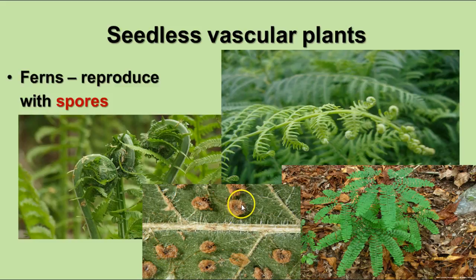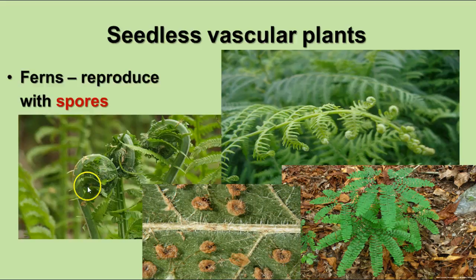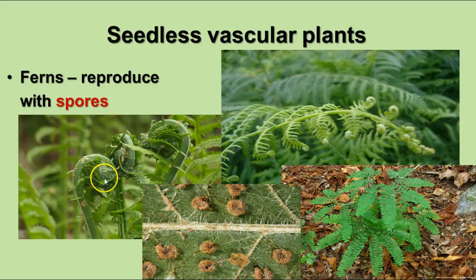Sori — s-o-r-i — is the plural, and those produce spores by meiosis. The spores are released and grow into the gametophyte stage. When ferns emerge, the leaves come up in a curled-up form rather than just unfolding like most plants do. This particular structure is called a fiddlehead, and it's characteristic of ferns — they unfurl by uncurling and spreading out.